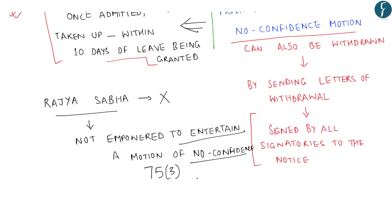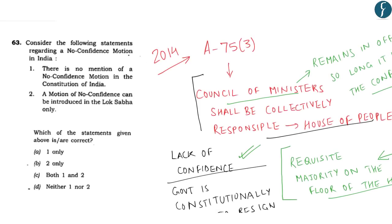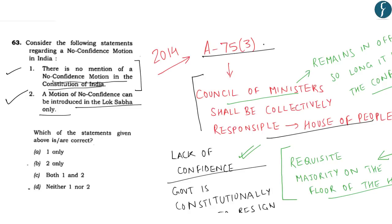Looking at the 2014 UPSC question: 'Consider the following statements regarding a no confidence motion in India.' First, there is no mention of a no confidence motion in the Constitution of India — as seen under Article 75 clause 3, the phrase 'no confidence motion' has not been explicitly mentioned. Hence, this statement is correct. Second, a motion of no confidence can be introduced in the Lok Sabha only — this is correct because Article 75.3 provides that the council of ministers shall be collectively responsible to the house of the people. Hence, both statements 1 and 2 are correct.